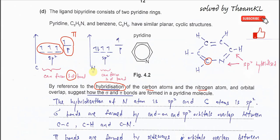For nitrogen, it has five valence electrons. Nitrogen forms two sigma bonds and one pi bond, so it also forms sp2 hybrid orbitals. It uses the two unpaired electrons in these hybrid orbitals to form the two sigma bonds, giving nitrogen sp2 hybridization as well. The one electron remaining in the p orbital forms the pi bond.